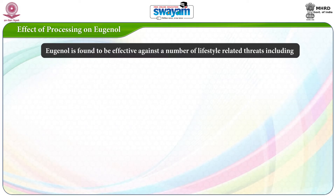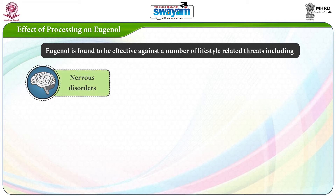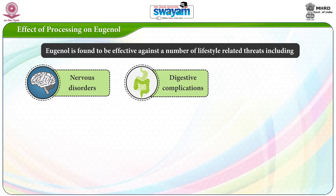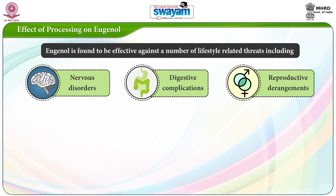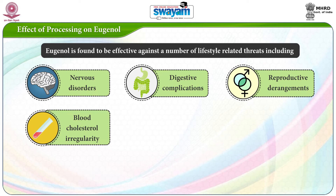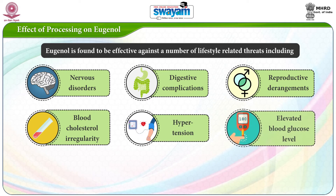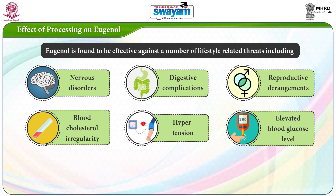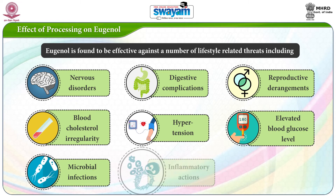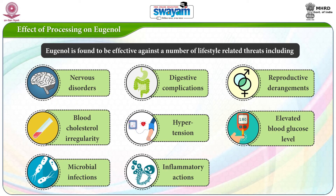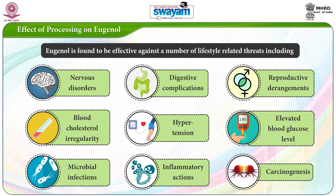Eugenol is found to be effective against a number of lifestyle-related threats including nervous disorders, digestive complications, reproductive derangements, blood cholesterol irregularity, hypertension, elevated blood glucose levels, microbial infections, inflammatory actions, and carcinogenesis.